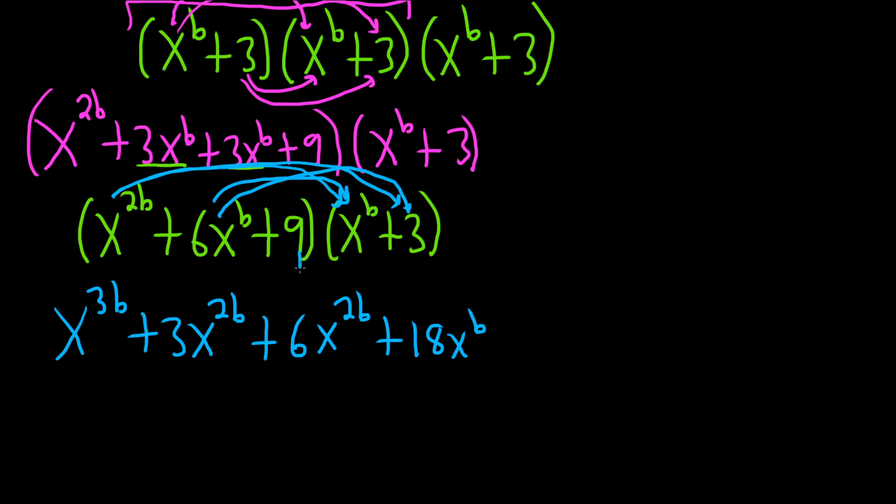Then we go to the 9, 9x to the b, so plus 9x to the b. And then 9 times 3, so plus 27.